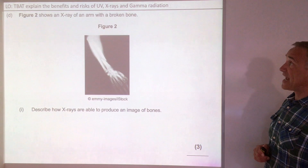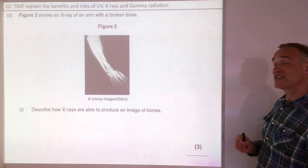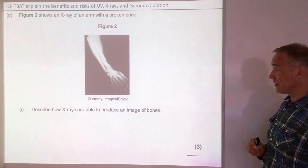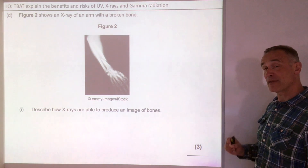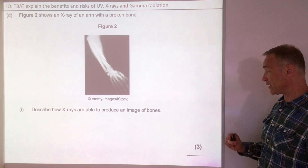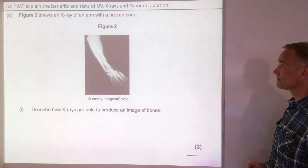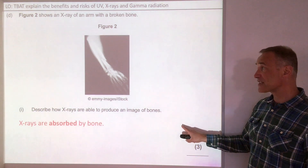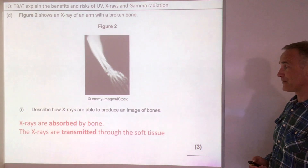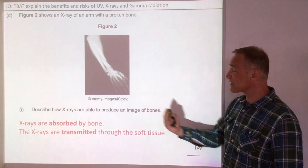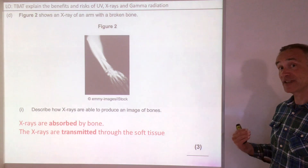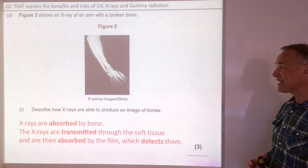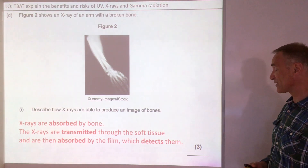Figure 2 shows an x-ray of an arm with a broken bone. Describe how x-rays are able to produce an image of bones — pause the video, think about key words, it's worth three marks. The answer: first, x-rays are absorbed by the bone. Second, x-rays are transmitted through the soft tissue — they pass through the soft tissue. And third, they are absorbed by the film which detects them.